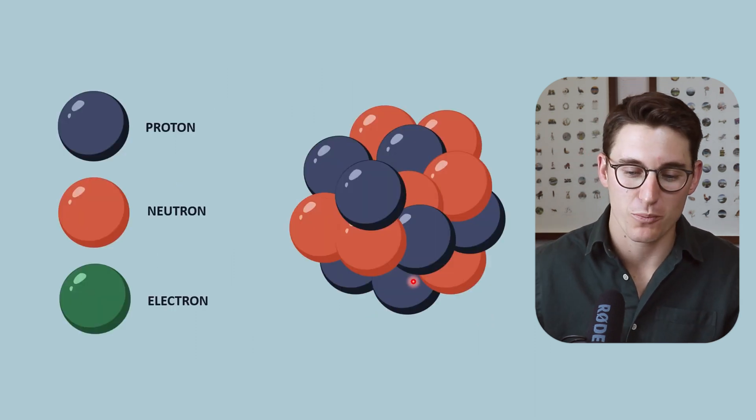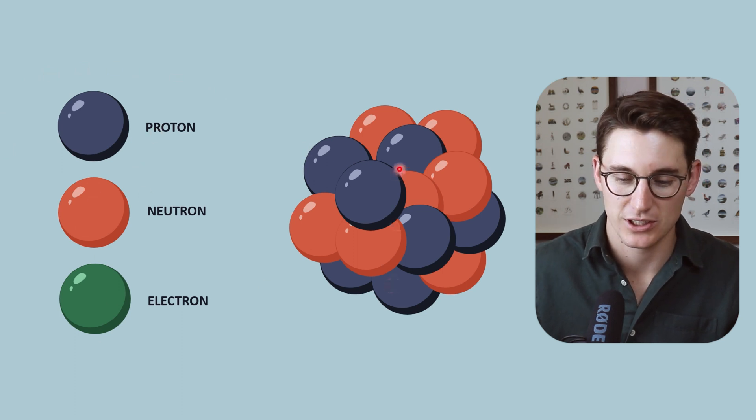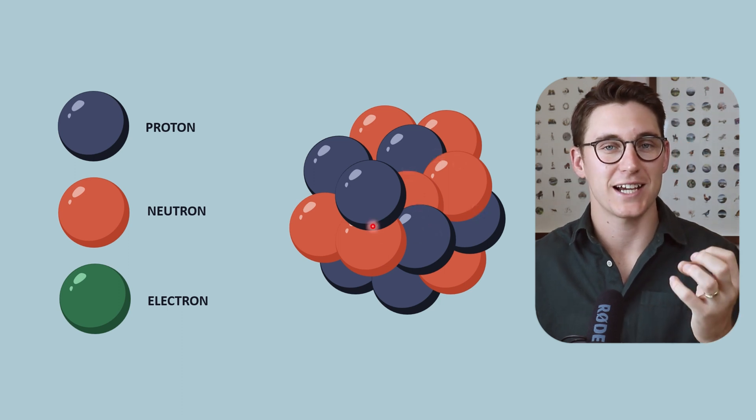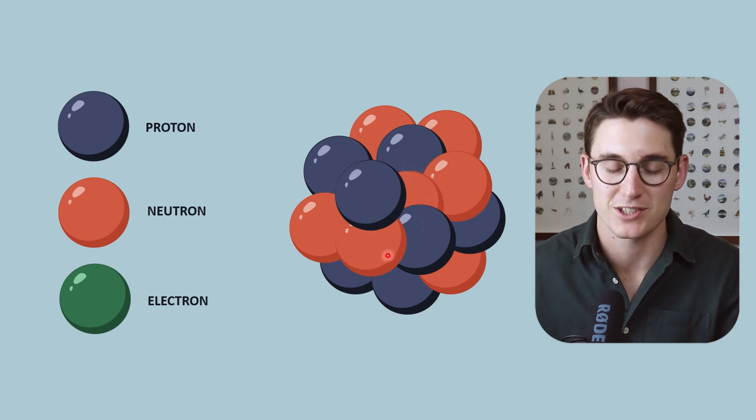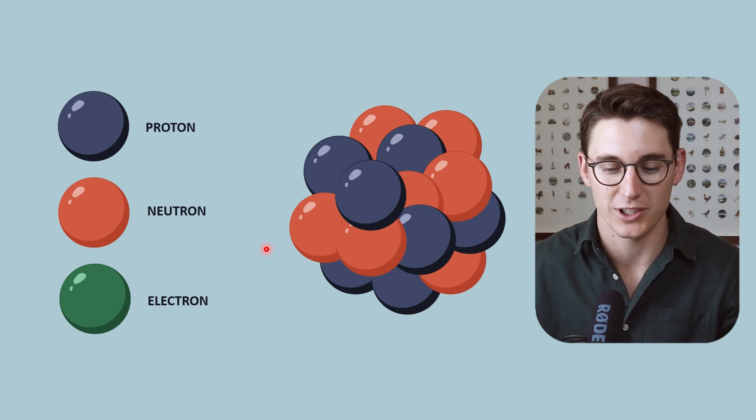As I'm sure you're aware, atoms are comprised of atomic particles known as protons, neutrons, and electrons. The positively charged protons and neutral neutrons are packed tightly together in a central core known as the nucleus, and the negatively charged electrons orbit around that central nucleus.